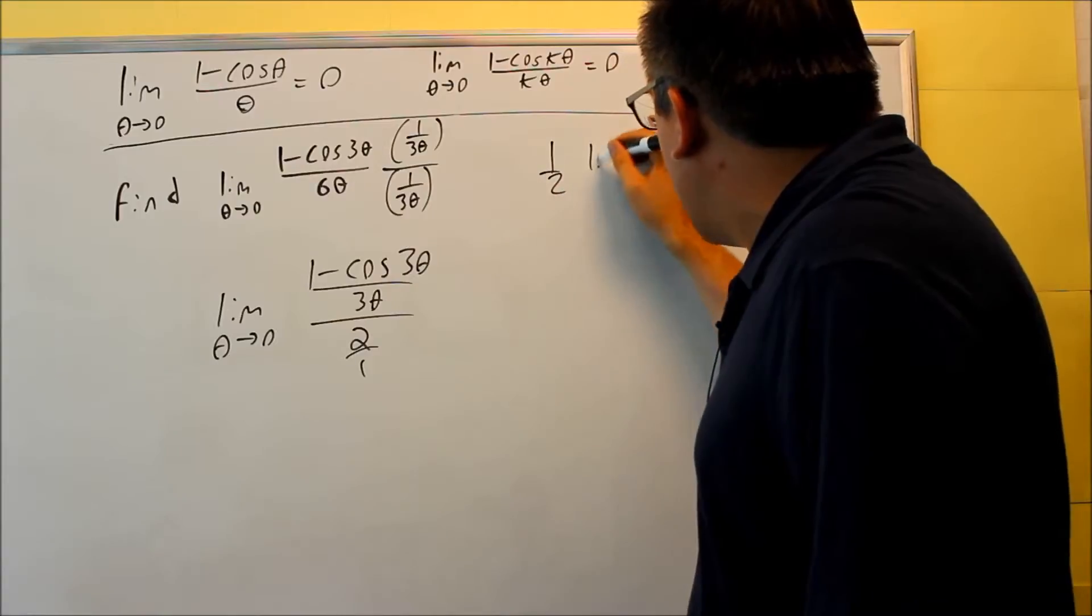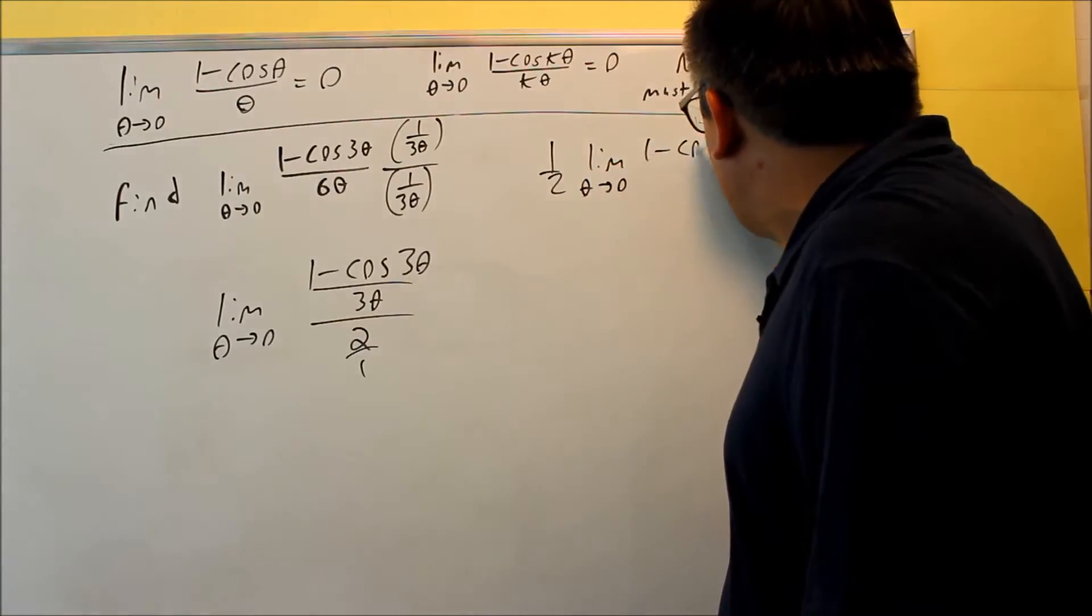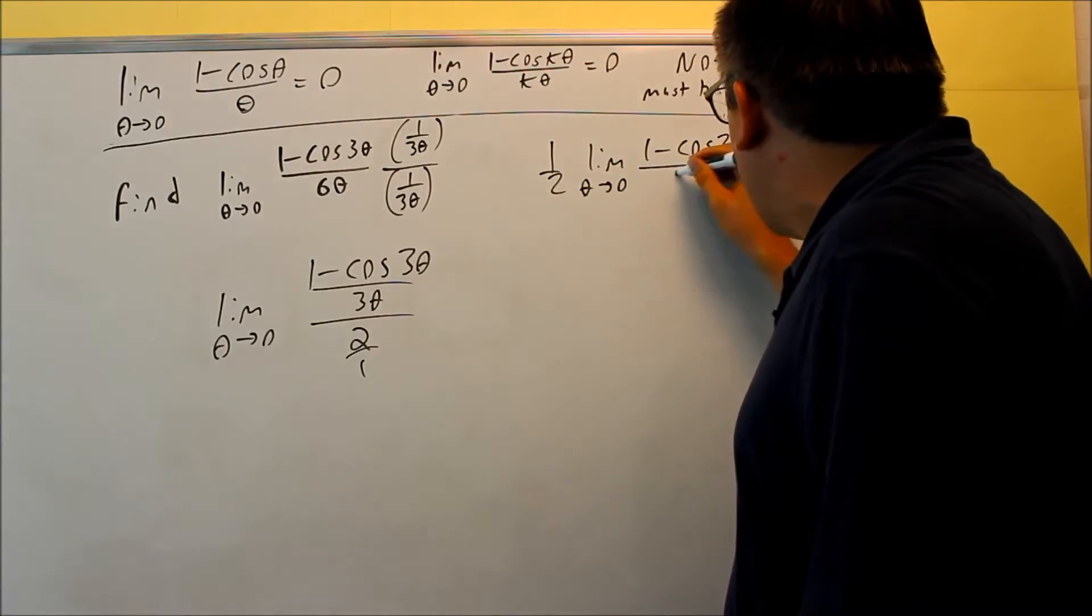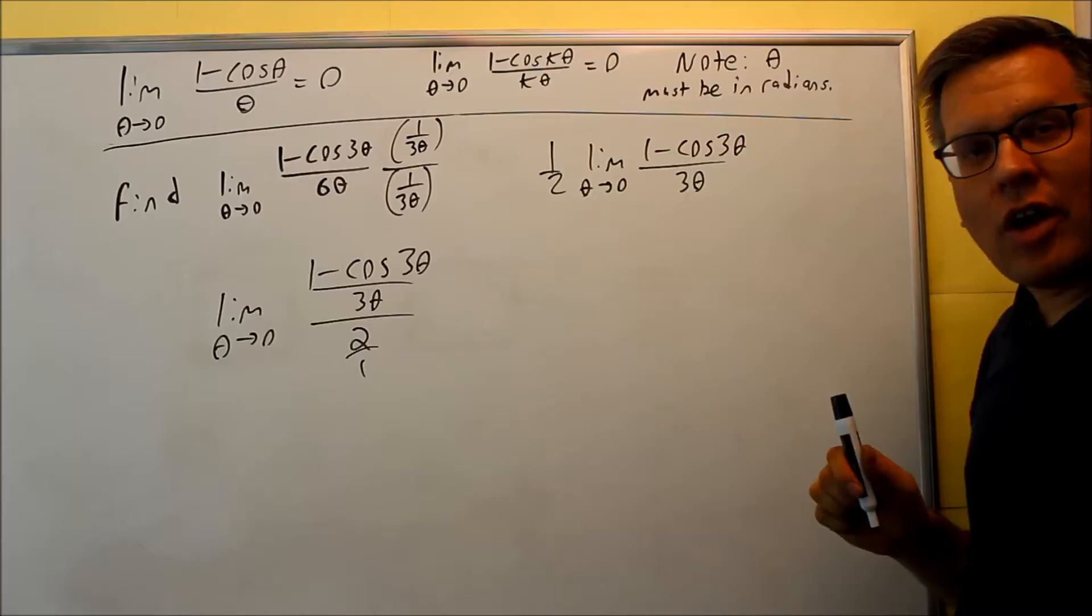So, I can write it this way. I can put a one half out in front of the limit. And then now what I have left is something where I can apply the special limit. I can apply that because I have the k values are now the same.